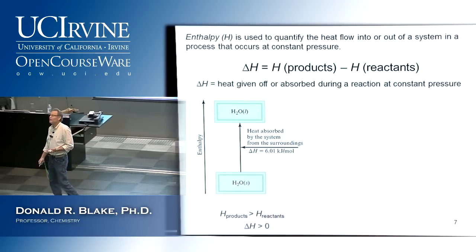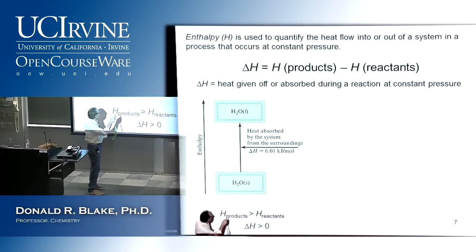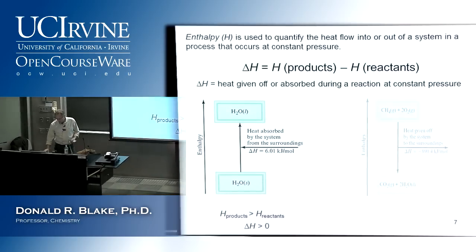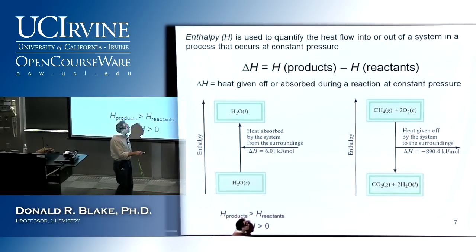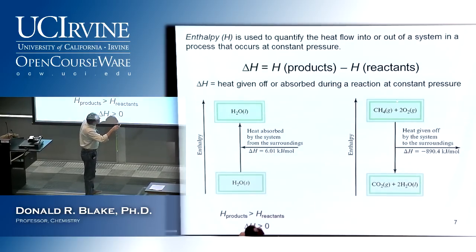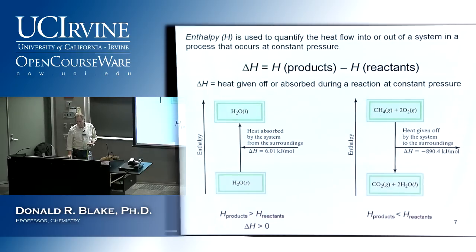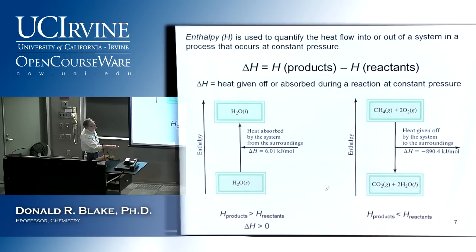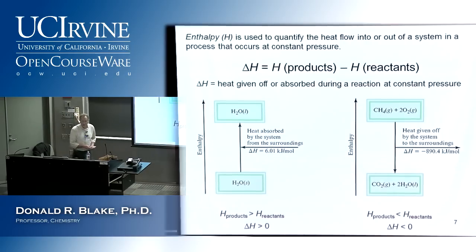If instead you burn methane, look at how much energy is given off — 890 kilojoules per mole. These products are a lot more stable. The reactants had more energy than the products — 890 kilojoules per mole was given off as heat. Therefore ΔH is negative. So when I have to give something energy, ΔH is positive (endothermic); when heat is given off, ΔH is negative (exothermic).